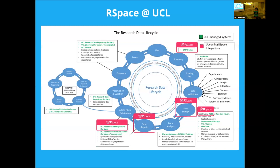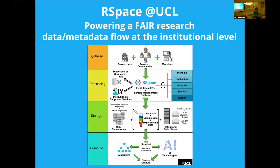Coming back to our research data lifecycle concept, R-Space integrates with all sorts of things at University College London, where we have a major deployment, including data management plans, storage, and other resources that make the cycle flow more easily. UCL put together a graphic envisioning this as a pipeline-like flow where data is collected in R-Space, its attributes are passed on, and eventually becomes available for operations and things like AI.